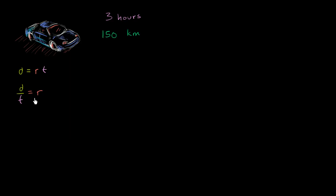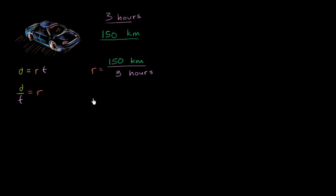For example, rate is distance divided by time. So my rate in this situation is going to be 150 kilometers divided by 3 hours. Looking at the numeric part, 150 divided by 3 is 50. So this is equal to 50 kilometers per hour.